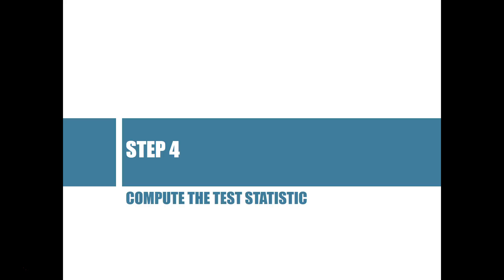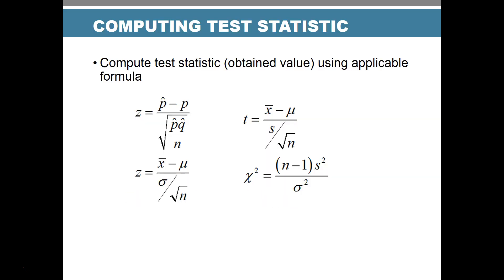Step four: compute the test statistic. We take the formula for our chosen test and plug in our sample results to get a test statistic — a z-test statistic, chi-square statistic, or t-test statistic, depending on which test we're using. This value is also called the obtained value.